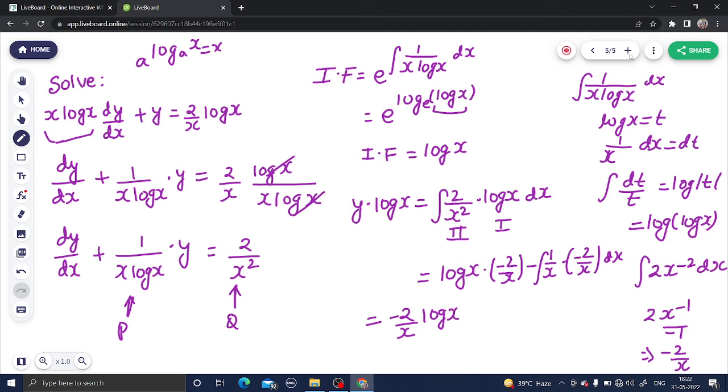And minus minus plus integral of 2 by x square. Again, that came out to be 2 by x square, the integration we all know is minus 2 by x. So minus 2 by x, if I take common, you will get log x plus 1.